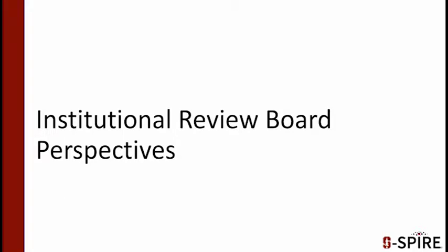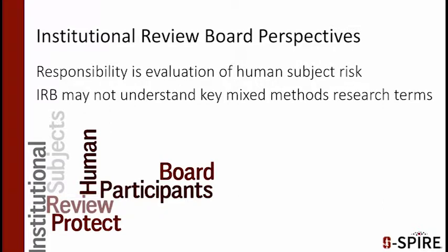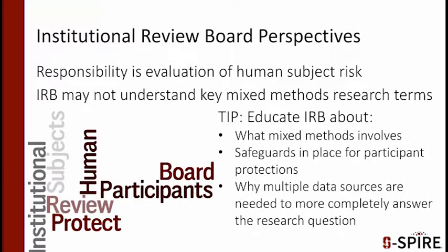Let's briefly talk about the perspectives of those on the Institutional Review Board. The responsibility of the IRB is really to evaluate risk to human subjects. IRBs may not understand key mixed methods research terms, so be clear about what your mixed methods study involves. Be very deliberate in explaining all of the various steps, and make sure you adequately describe the safeguards in place to protect participants at every stage of the research process. When using multiple data sources and methods, explain how these are going to be used to answer your research questions, and explain to the IRB why you need multiple sources rather than just one.